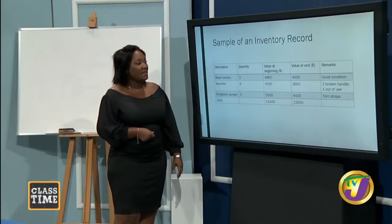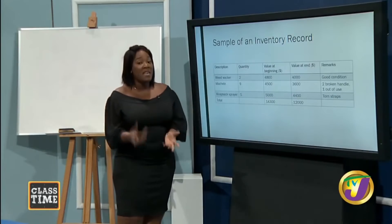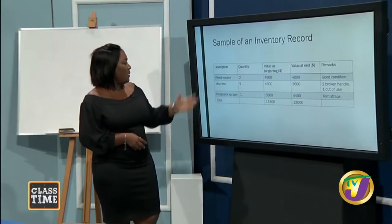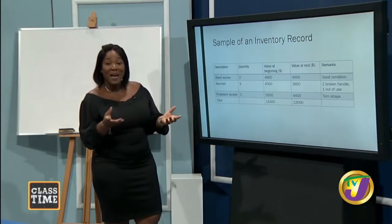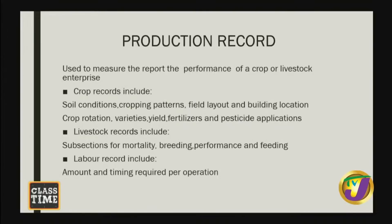Another example of an inventory record states the name of the implement in the description area. For example, a weed walker — quantity two — at the beginning of the accounting period cost $4,800 for both. The value at the end is $4,000, so over the accounting period the item lost value of $800. The comments state: in good condition. By looking at your record here, you can make informed decisions.